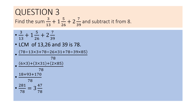Question 3: Find the sum of 3 by 13 plus 1 and 5 by 26 plus 2 and 7 by 39, and subtract it from 8. Converting mixed numbers: 1 and 5 by 26 gives 31 by 26, and 2 and 7 by 39 gives 85 by 39. So the sum to find is 3 by 13 plus 31 by 26 plus 85 by 39.